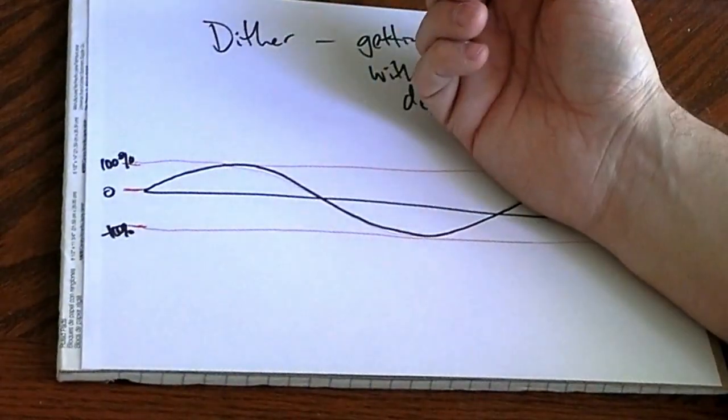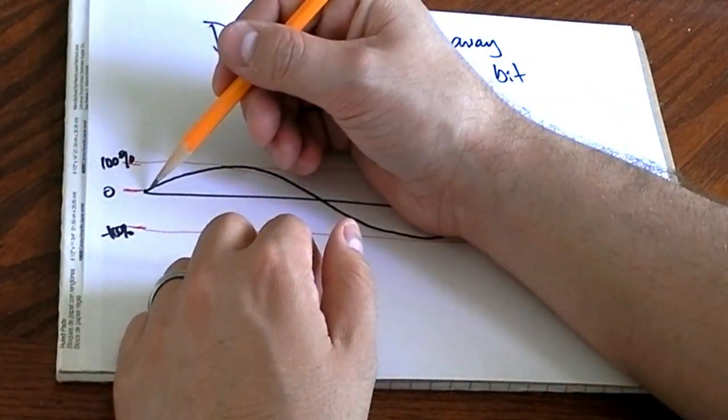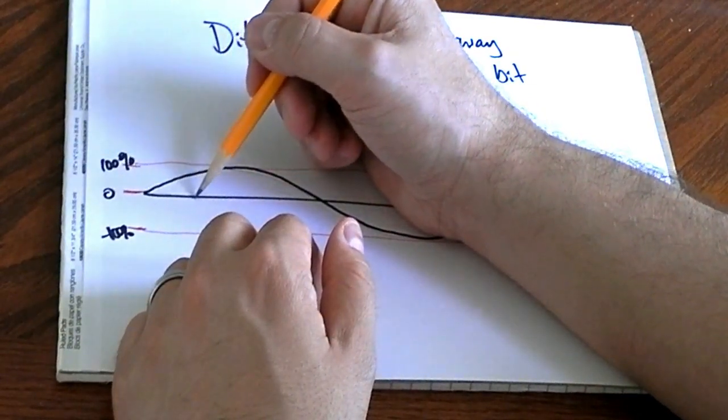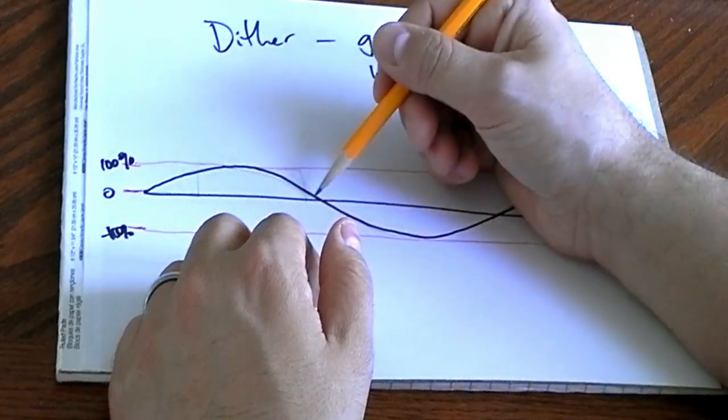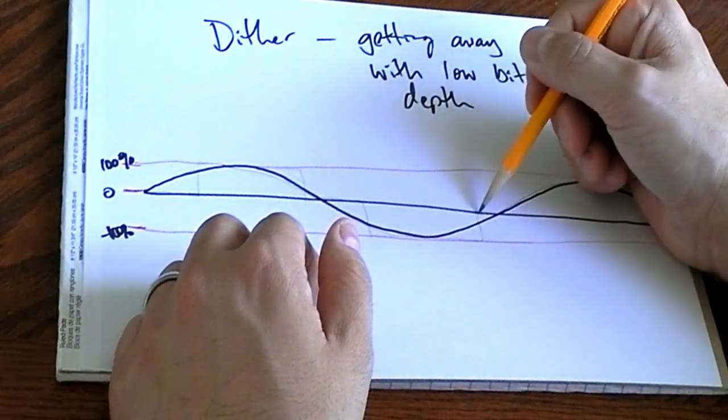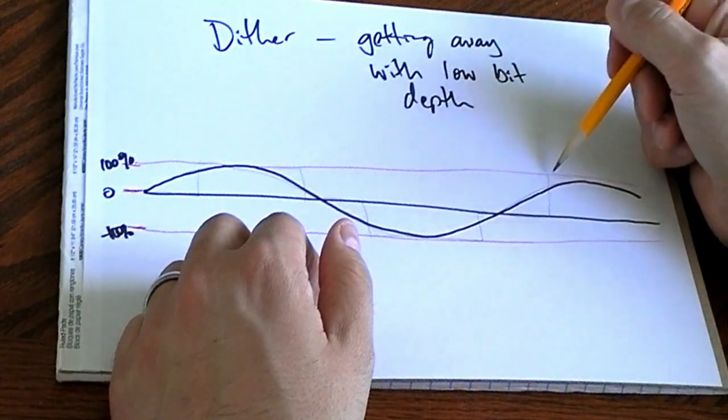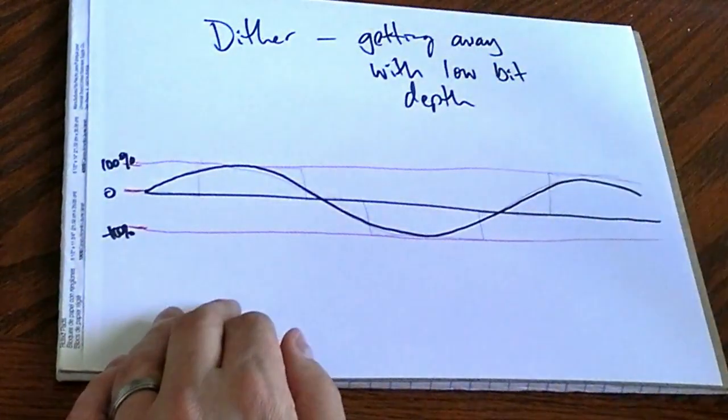100%, minus 100%. Well, this is a terrible situation if we're not using dither, because the wave that we end up with is like this. We're just rounding it off to whichever one it's closest to, and we get this awful distorted sound.